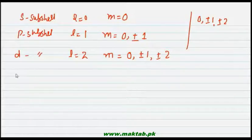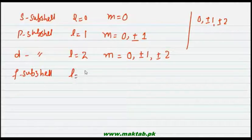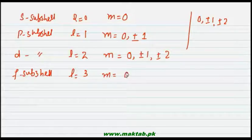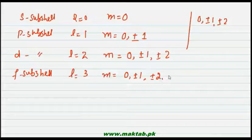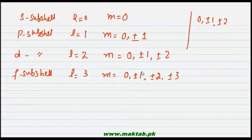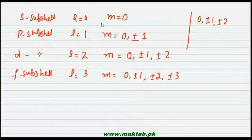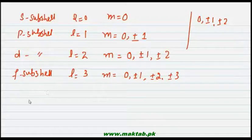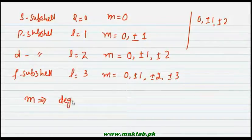Similarly for the f subshell, l = 3 and m has 7 values: 0, +1, −1, +2, −2, +3, and −3, giving 7 total values. Now, what does m actually tell us? The value of m tells us the degeneracy of the orbital.